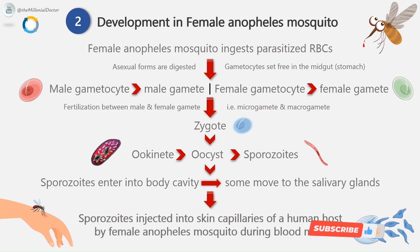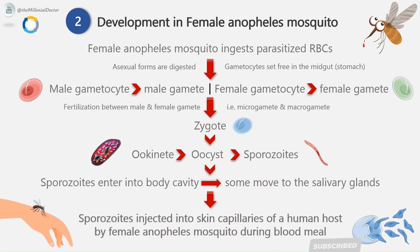The ookinete penetrates the epithelial lining of the mosquito's stomach wall and comes to lie just beneath the basement membrane, where it becomes rounded into a sphere with an elastic membrane. This stage is called the oocyst, which is yet another multiplicatory phase within which numerous sporozoites are formed. The mature oocyst, which may be about 500 micrometers in size, bulges into the body cavity of the mosquito, and when it ruptures, the sporozoites enter the haemocoel or body cavity, from where some sporozoites move to the salivary glands. The mosquito is now infective, and when it feeds on humans, the sporozoites are injected into skin capillaries to initiate human infection. The extrinsic incubation period is the time taken for completion of sporogony in the mosquito, which is about 1 to 4 weeks, depending on environmental temperature and species.